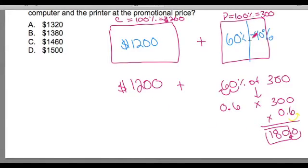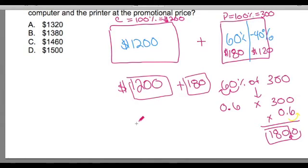So out of the $300, I'm only really going to be paying $180. And I'm saving 40%, which is $120. So if I'm only paying $180 here, add that to the $1,200, it comes out to $1,380.